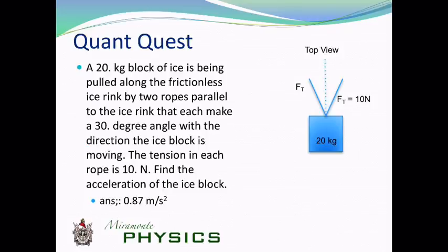Okay, so here's a quantitative question. This is another Newton's second law problem. Let's take a look at it. A 20 kilogram block of ice is being pulled along the frictionless ice rink by two ropes parallel to the ice rink that each make a 30 degree angle with the direction the ice block is moving. The tension in each rope is 10 newtons. Find the acceleration of the block.